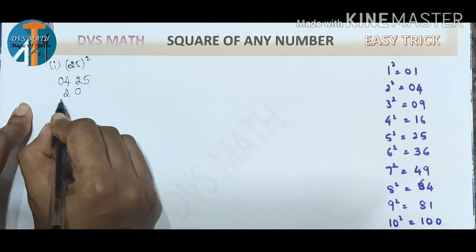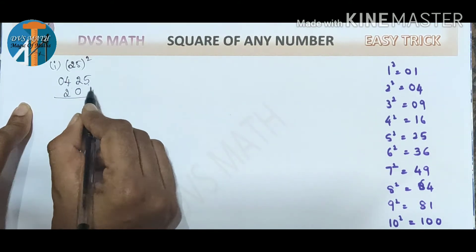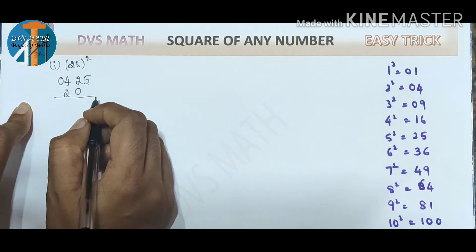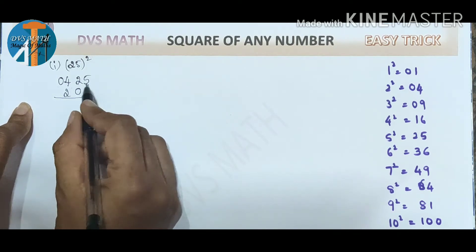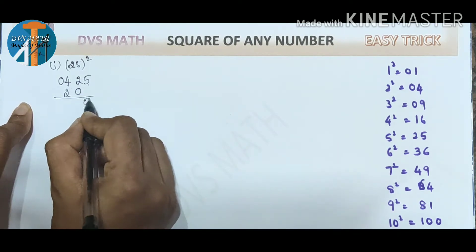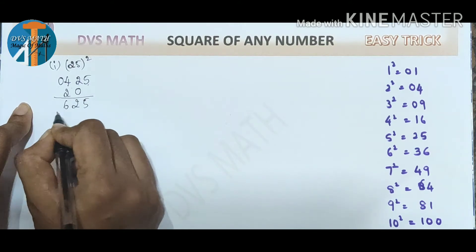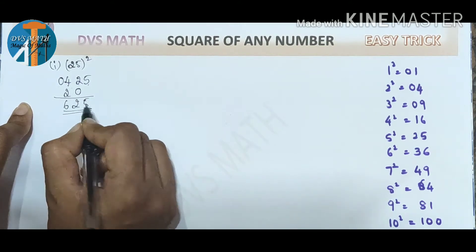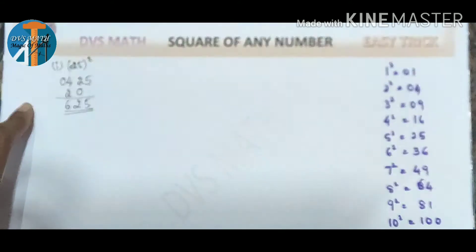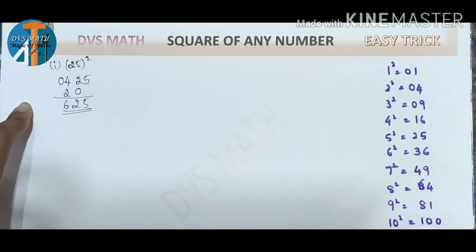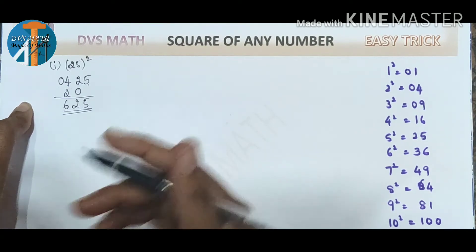Now we will add: 5, 2, 4 plus 2 is 6. So this digit is 0. You raise the final answer: 6,25. So 25 squared is 625. This is simple.